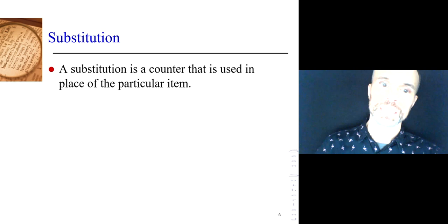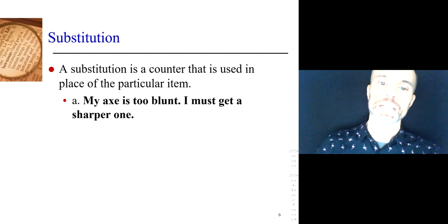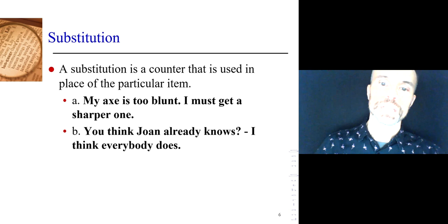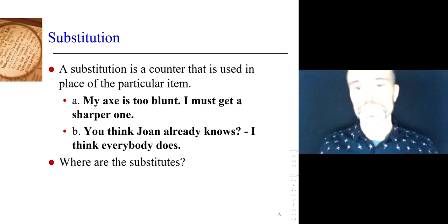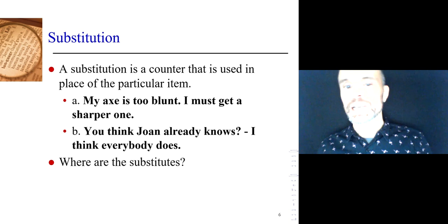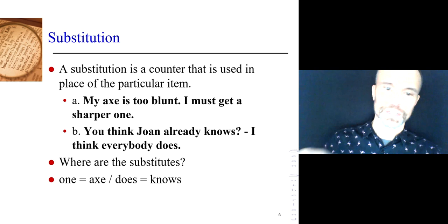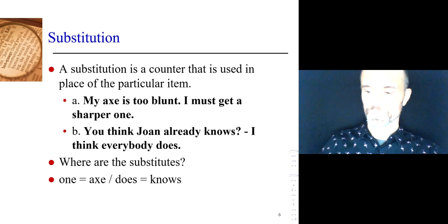A substitute is a counter that is used in place of a particular item. I'm going to explain in more detail what that means. We've got examples here. My axe is too blunt. I must get a sharper one. You think Joan already knows. I think everybody does. What are the substitutes? In the second sentence of A and in the second sentence of B, there's a word that substitutes for a word in the first sentence — a word you can only understand by looking back at the first sentence.